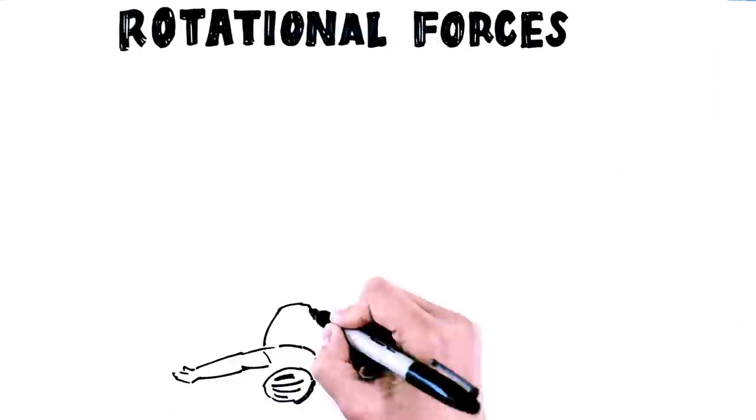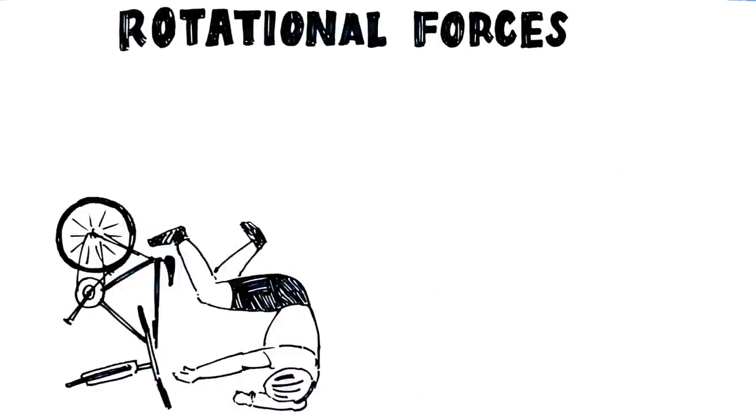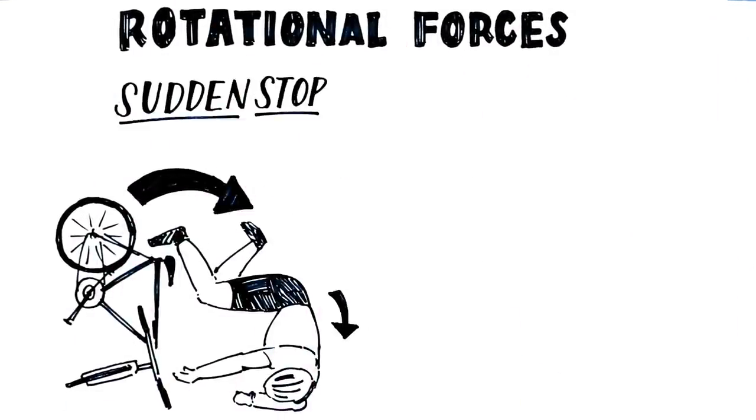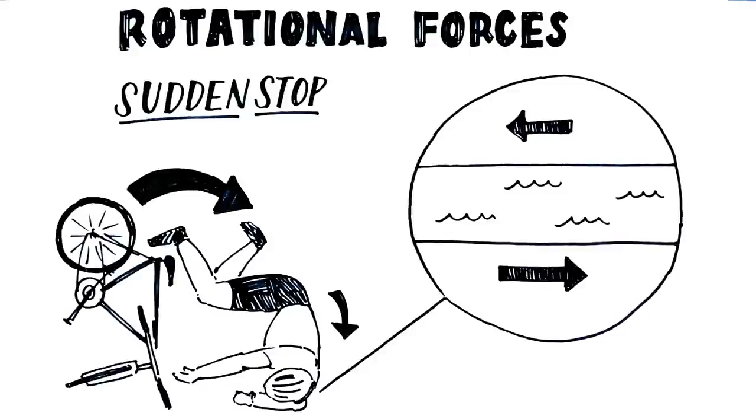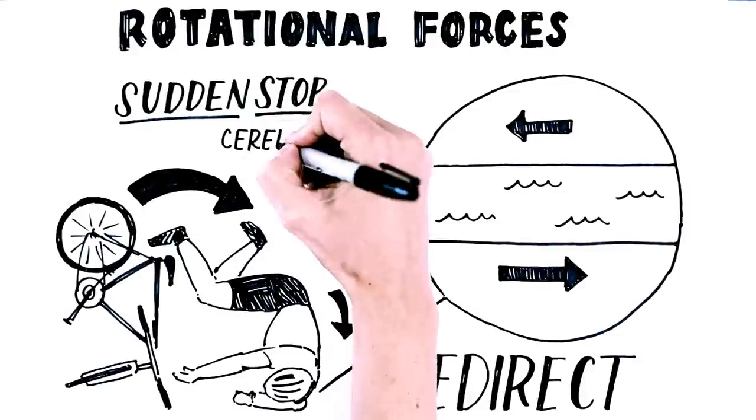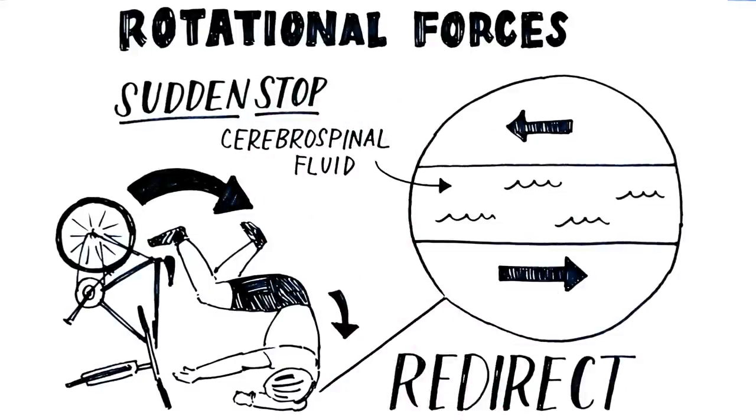Rotational forces, on the other hand, can occur when your head is struck at an angle and comes to a sudden stop. This can cause the brain to twist within the skull and become injured. The body's primary defense in redirecting these rotational forces is cerebrospinal fluid, which floats between the brain and skull.